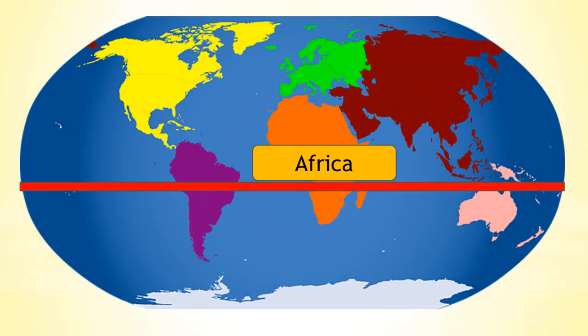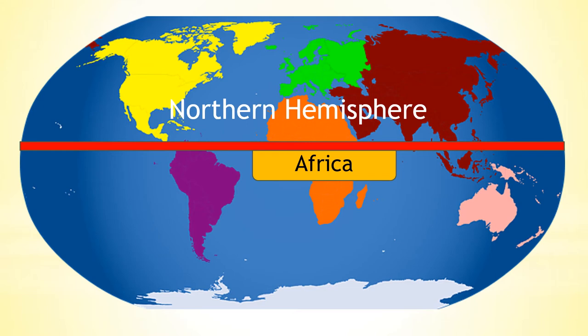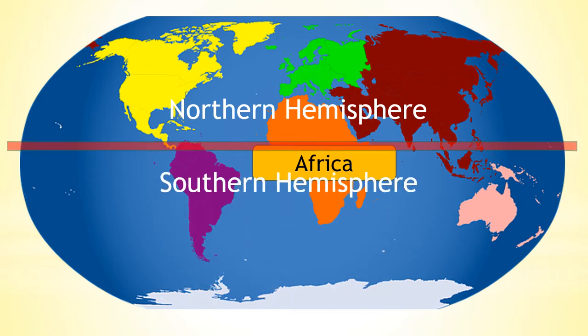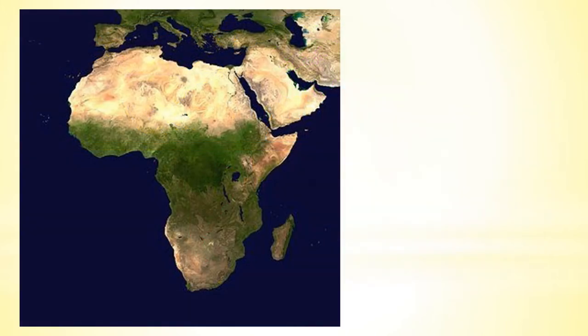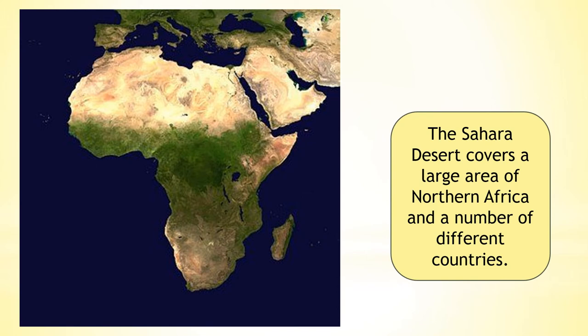The equator is an invisible line which separates the Northern Hemisphere from the Southern Hemisphere. As you can see, the equator runs through Africa. The Sahara Desert covers a large area of Northern Africa and a number of different countries.